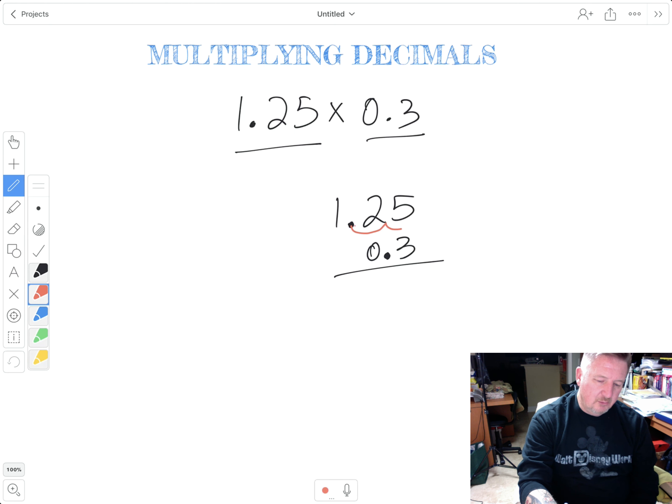So you start at the decimal and you count to the right, 1, 2. In this case, there's two decimal places. And in the second number's case, I only have one decimal place. So that's going to play a factor in later in the problem. We need to figure that out.